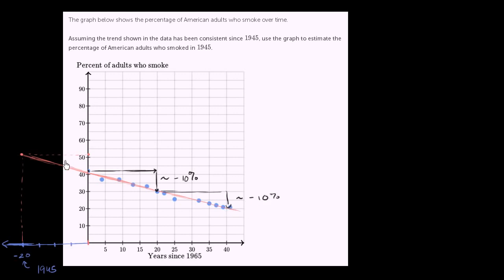So if you go back 20 years, you should increase your percentage by 20%. So this should go up by, or you should increase your percentage by 10%, I should say. So if we started at 41 or 42, once again, this is what we saw when we just eyeballed it. You should get to 51 or 52%. So my estimate of the percentage of American adults who smoked in 1945 would be 51 or 52%.